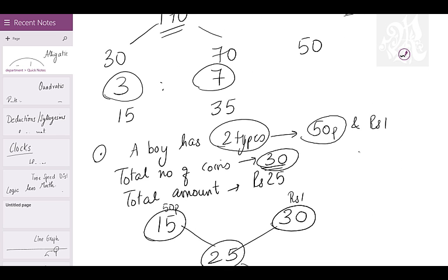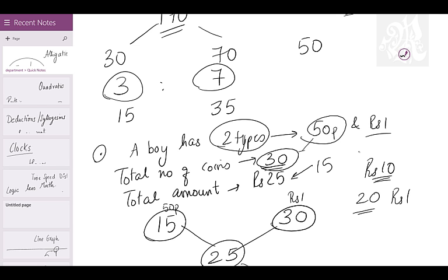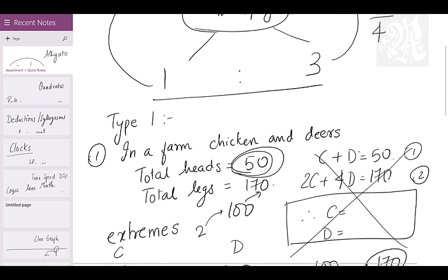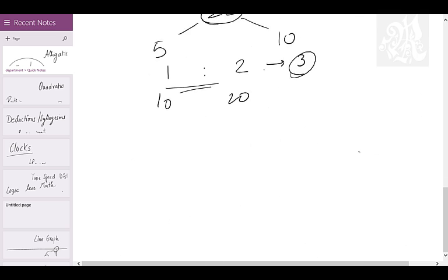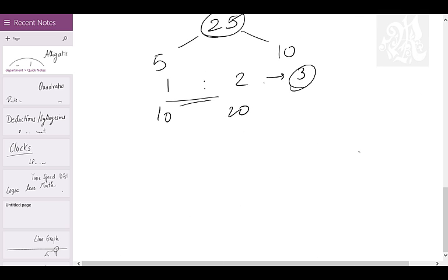Same logic for the coin question. Assume all 30 coins are 50 paisa — that makes 15 rupees. But the actual amount is 25 rupees, so 10 rupees extra. Since each 1 rupee coin was counted as 50 paisa, there's 50 paisa left to count per coin. How many 50 paisas make 10 rupees? That's 20 — so there are 20 one-rupee coins. You can go either way with the assumption.